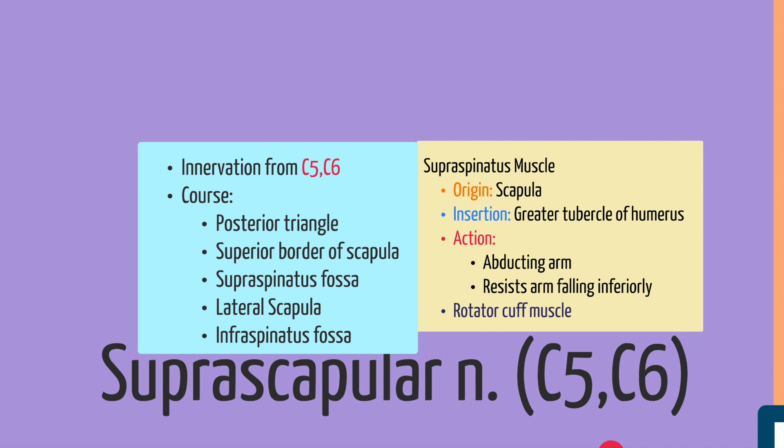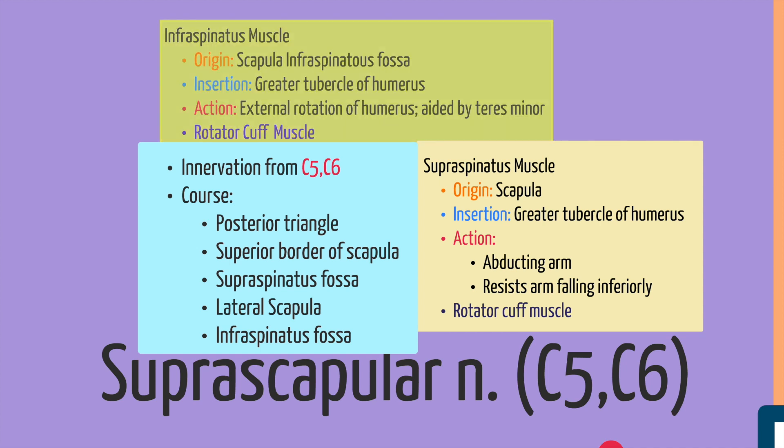The supraspinatus muscle originates from the scapula and inserts into the greater tubercle of the humerus. Based on its origin and insertion, it plays a role in abducting or lifting the arm away from the body, and also prevents the arm from falling inferiorly. The supraspinatus is one of the muscles grouped as the rotator cuff muscles. The second muscle supplied by the suprascapular nerve is the infraspinatus, which is also a rotator cuff muscle.